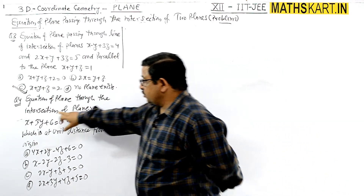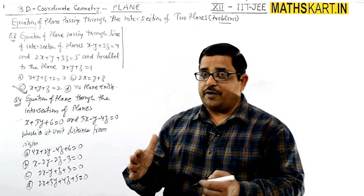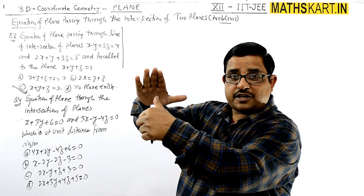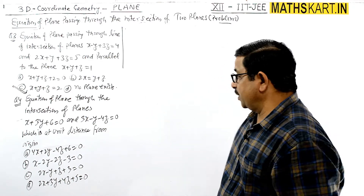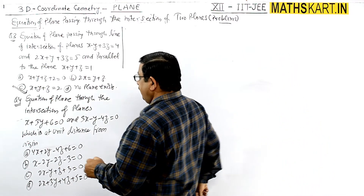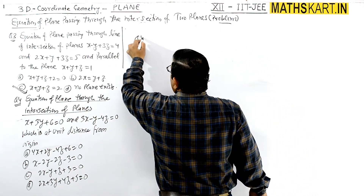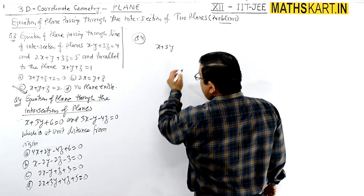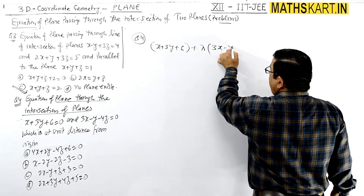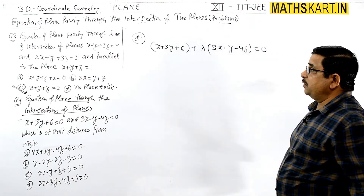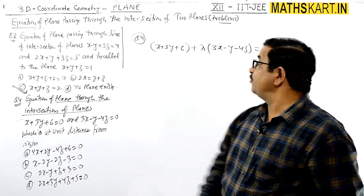Next, question 4: find the equation of the plane through the intersection of two given planes which is at unit distance from the origin. We need to convert to normal form and set the distance equal to 1. The family of planes through the intersection is: x plus 3y plus 6 plus lambda times (3x minus y minus 4z) equals 0.